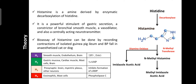Due to the increase in IP3 and DAG, calcium is accumulated. This accumulated calcium causes smooth muscle contractions, dilation of endothelium, and excitation in the CNS. H2 receptors are found in gastric mucosa, cardiac muscle, and brain. Histamine binding to H2 receptor enhances the formation of cyclic AMP, which regulates calcium levels.